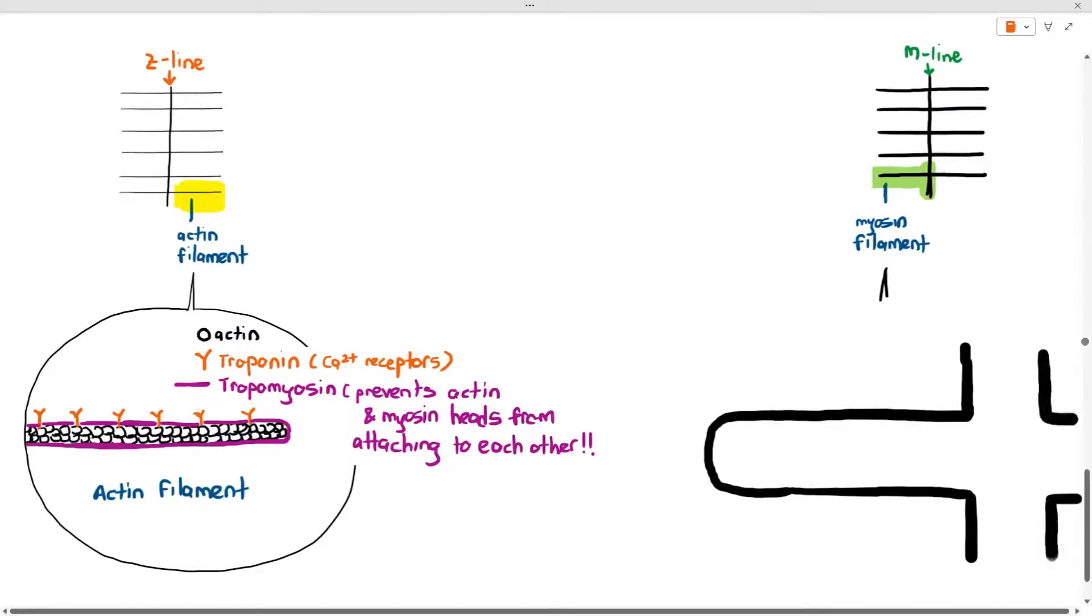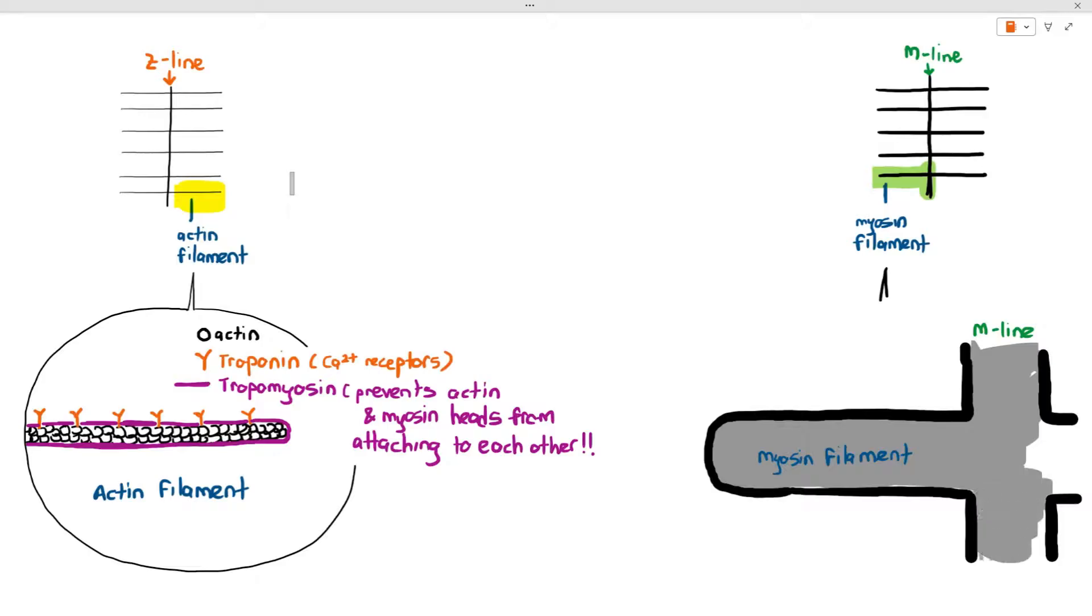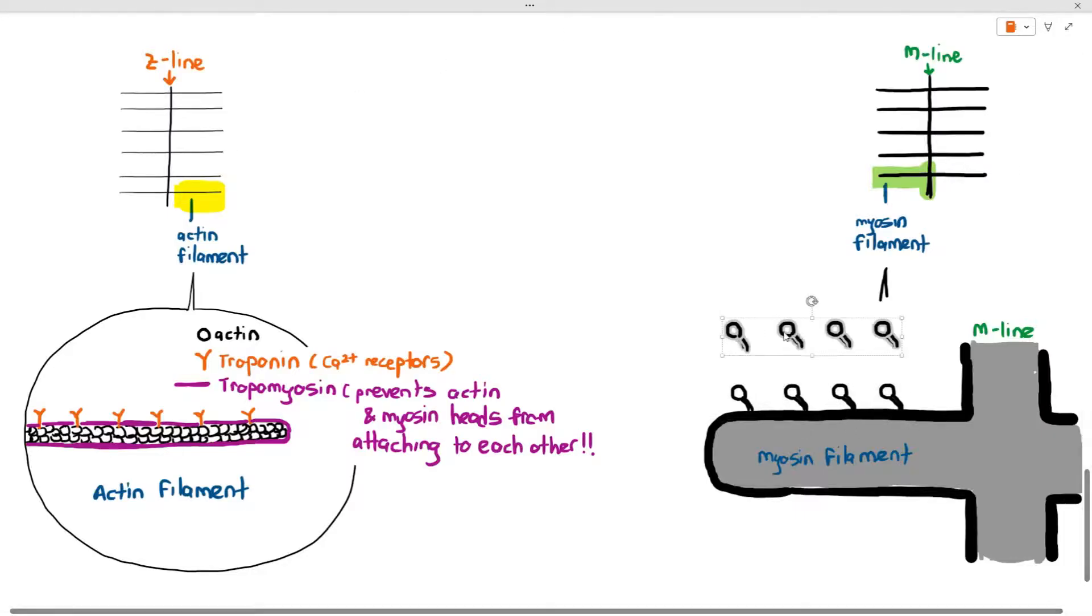You know that the thick area over there, that extension is the myosin filament. The line that is 90 degrees to it is the m-line. I'm now going to color it in with gray color.